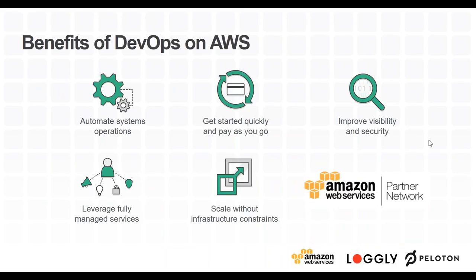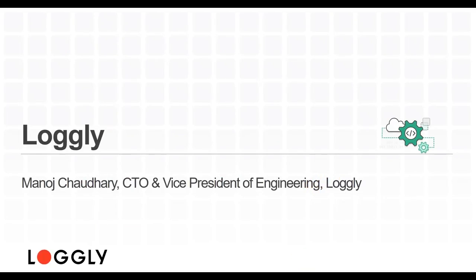At a glance with AWS, you can automate systems operations, get started quickly with pay-as-you-go pricing, gain improved visibility and security, leverage fully managed services, scale without infrastructure constraints, and take advantage of Amazon's global partner ecosystem — including top partners like Loggly, which has achieved the DevOps competency on top of AWS. With that, I'll transition to Manoj from Loggly, who is the CTO and Vice President of Engineering.